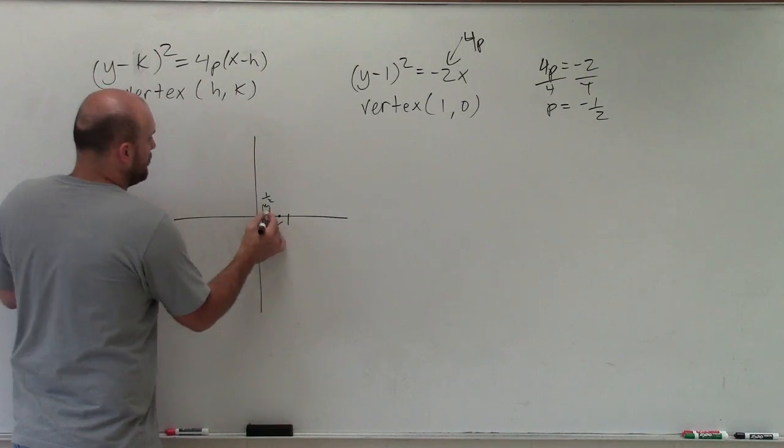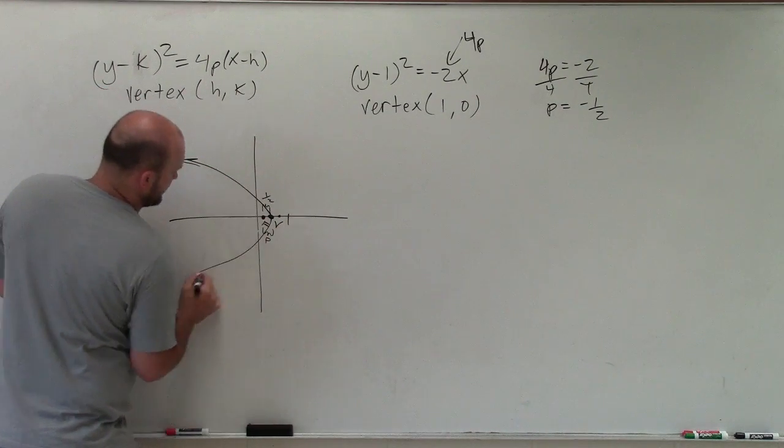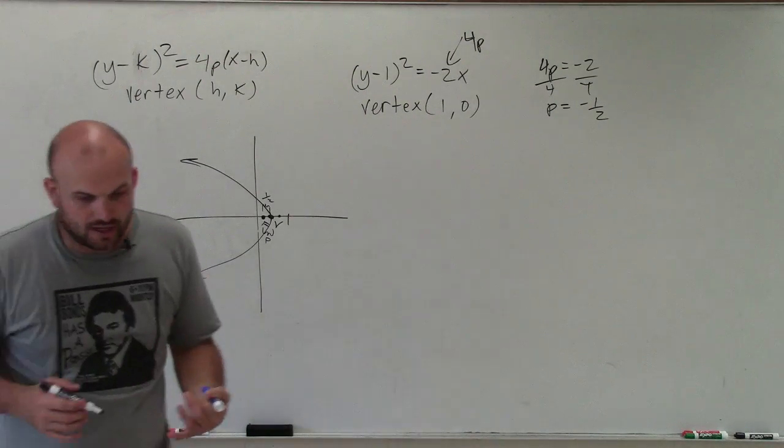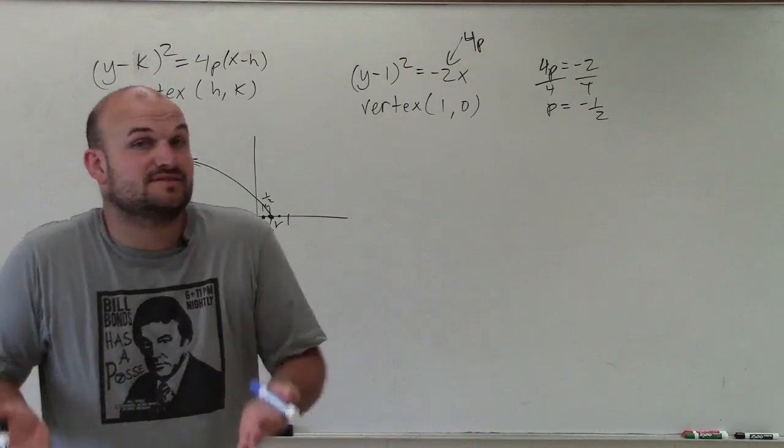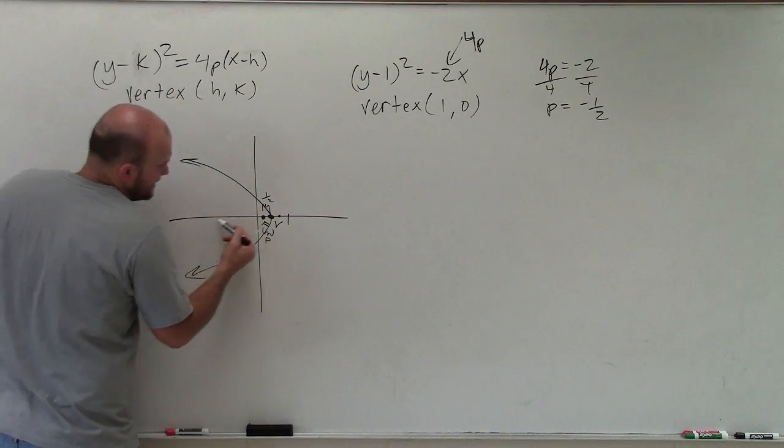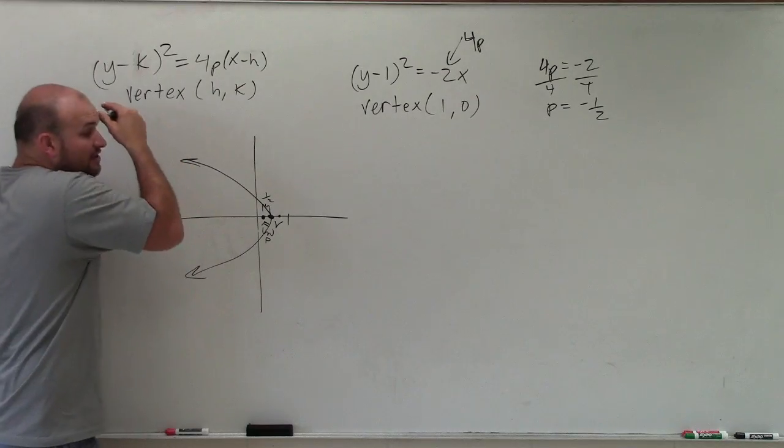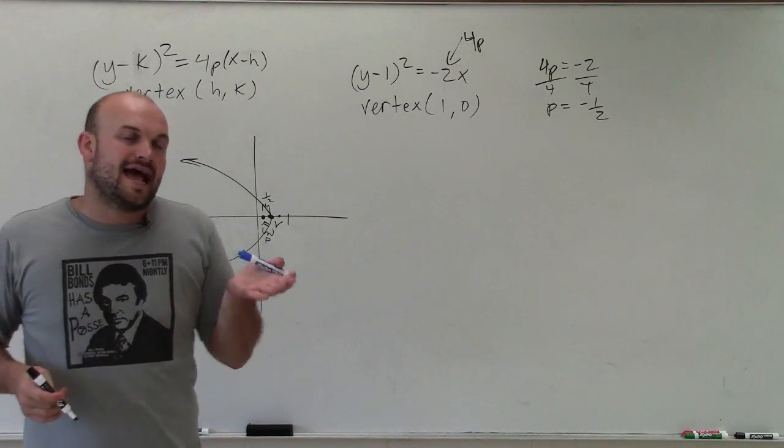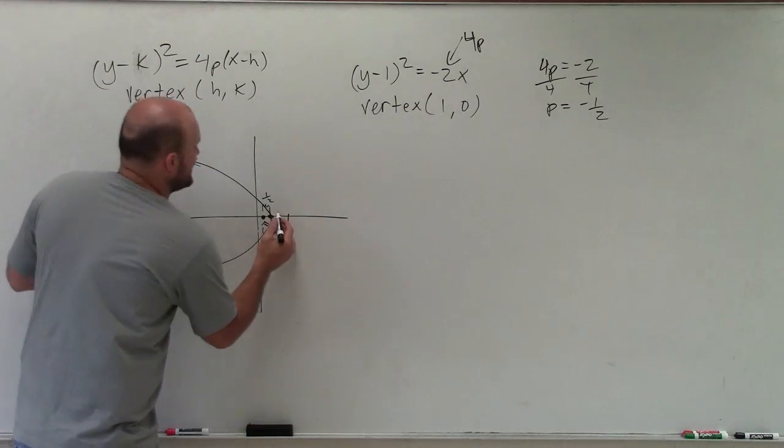Now, we know that the parabola opens up towards its focus. The other thing to understand about parabolas is they have axes of symmetry, and the axis of symmetry goes through the focus and the vertex. The directrix is actually perpendicular to that axis of symmetry, and the directrix is a line.